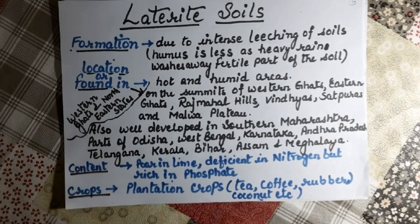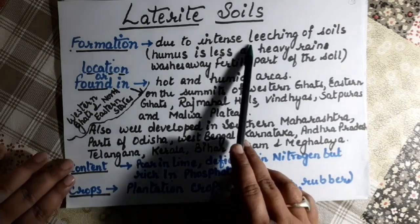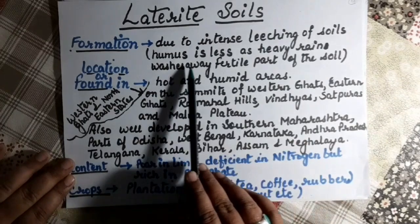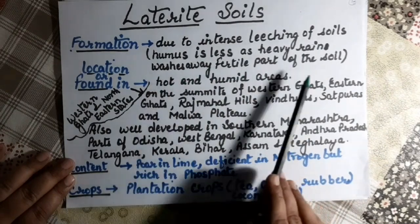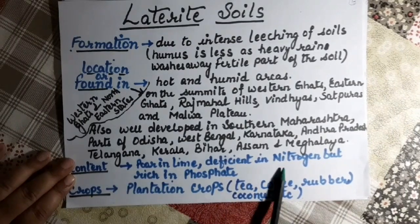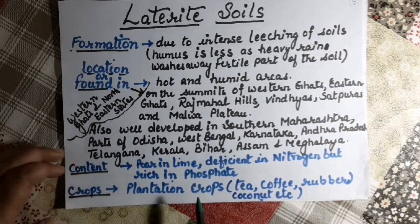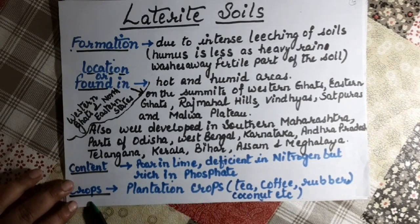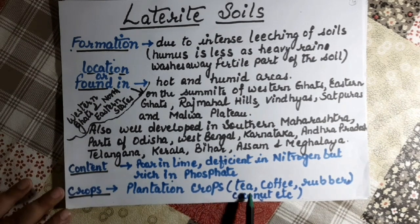Content: because of leaching, the soil is poor in nutrients. Plantation crops can be grown here, such as tea, coffee, rubber, and coconut.